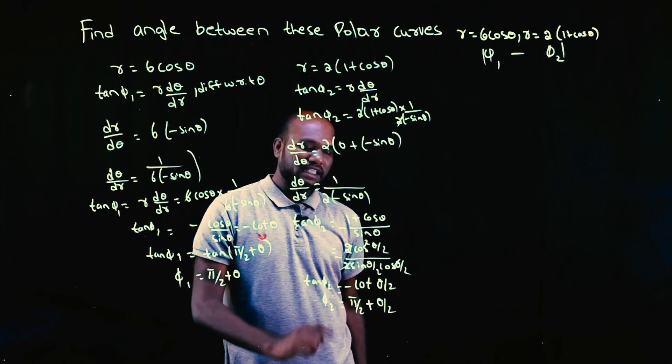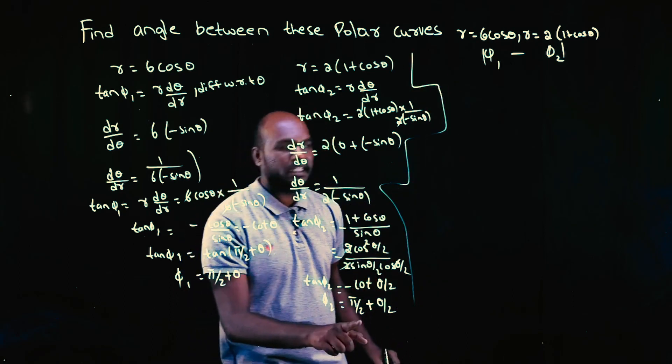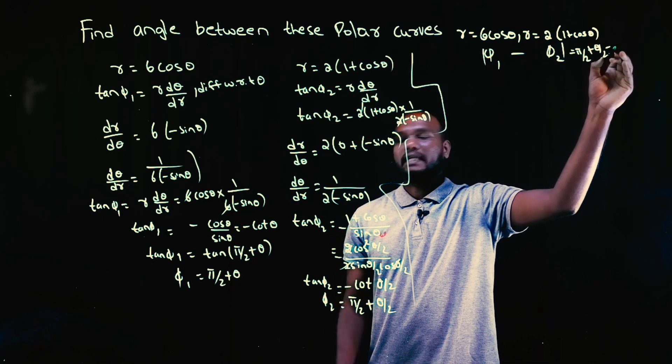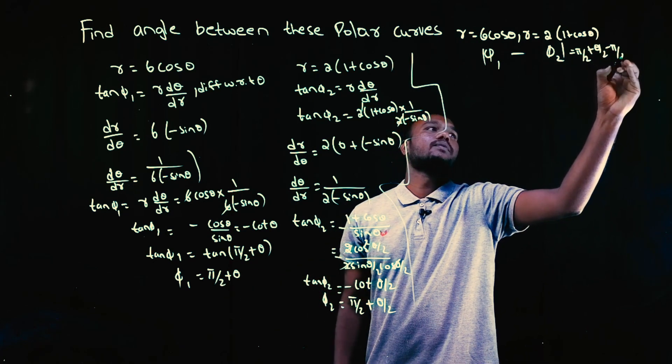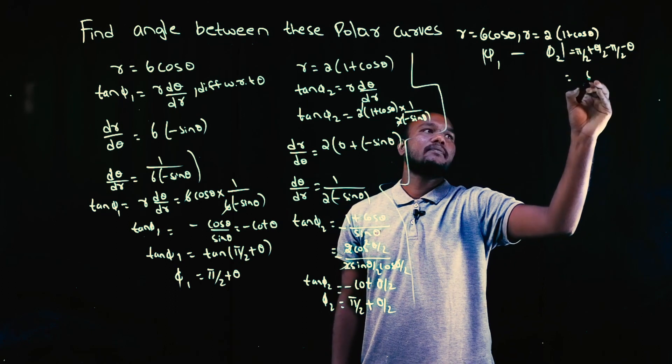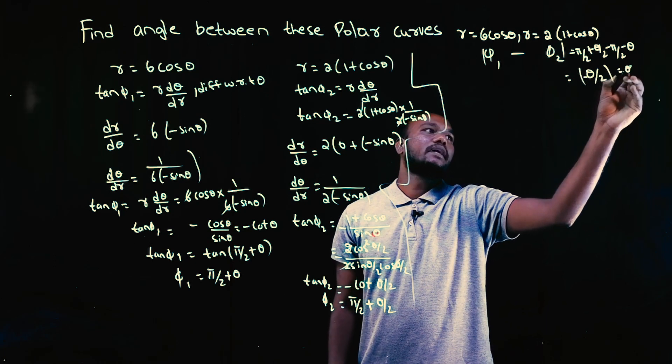Next φ1 minus φ2. We can directly see here φ1 minus φ2. That is π/2 plus θ minus π/2 minus θ/2. So, π/2 get cancelled. θ/2 minus θ. Theta is θ/2. Modulus is there. So, we can take minus θ/2 as θ/2 only.